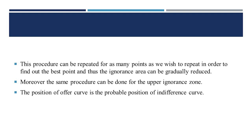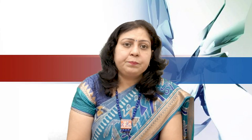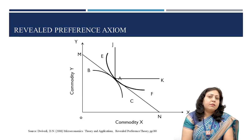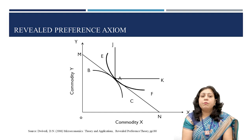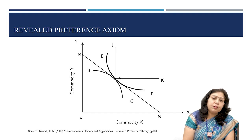The same procedure can be repeated for other points such as point C and point D. For example, if the consumer chooses bundle C, the analysis can identify bundles that are inferior to C in a similar manner, and the ignorance area can further be reduced.